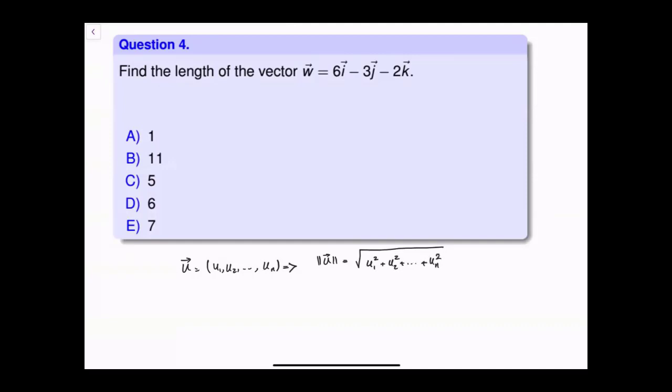You just need to do some easy calculation for this question. Specifically, the vector is 6i - 3j - 2k. Now, this is ijk notation in R³. To turn ijk notation to component notation, what you do is you find...